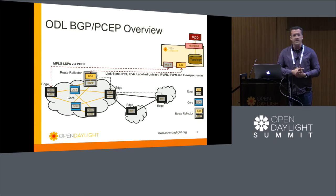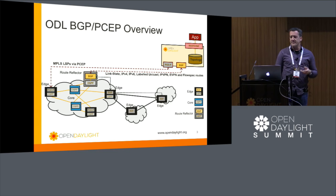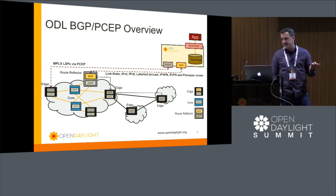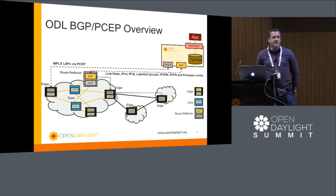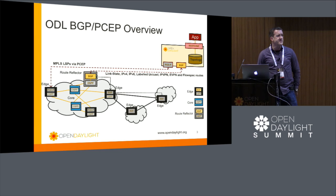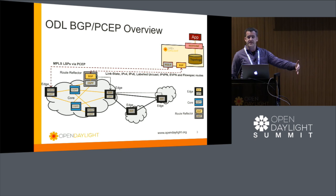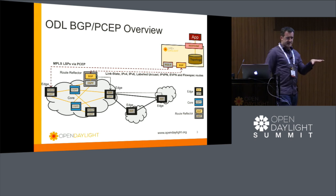Here's how it all fits together in OpenDaylight. The two southbound plugins are PCEP and BGP. BGP is used to learn routes from the network. We started with BGP link state, and over time more and more address families have been added. BGP started as IPv4, then multi-protocol BGP was developed, leveraging the extensibility of BGP's TLV structure to add more address families.